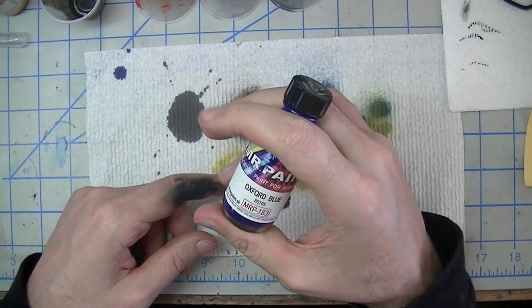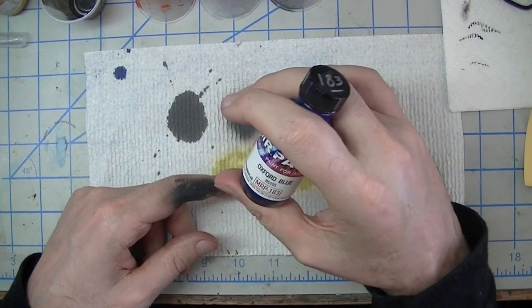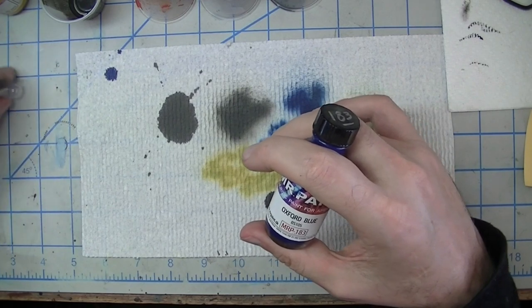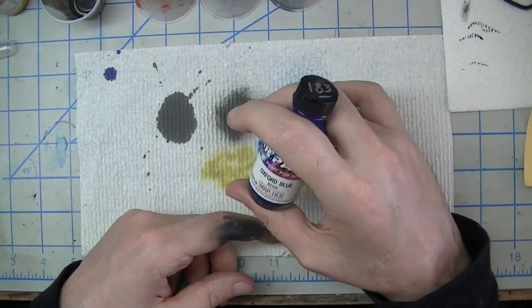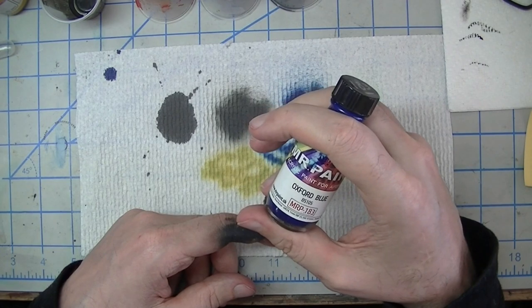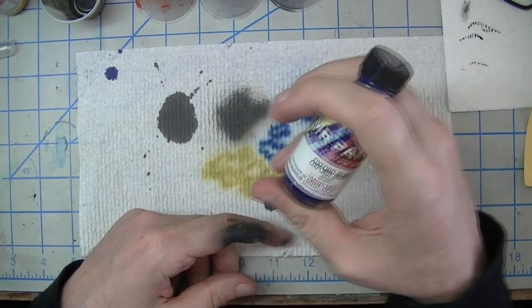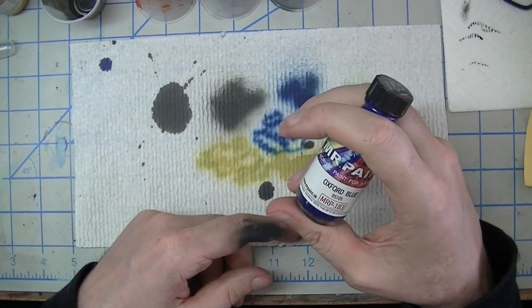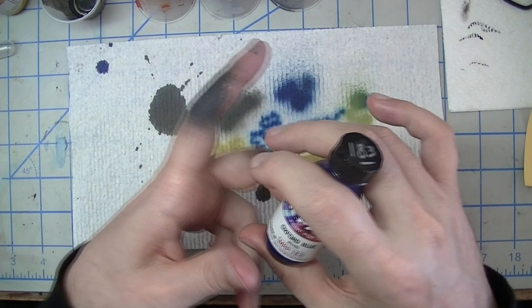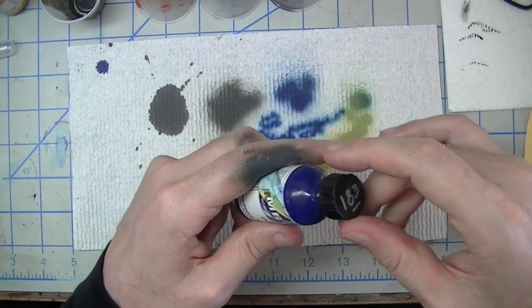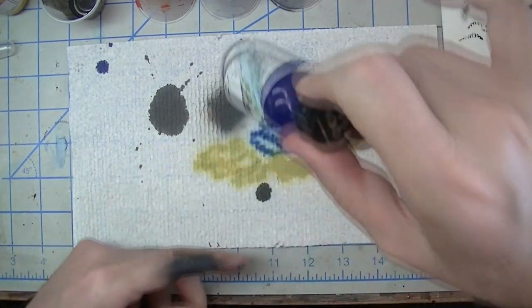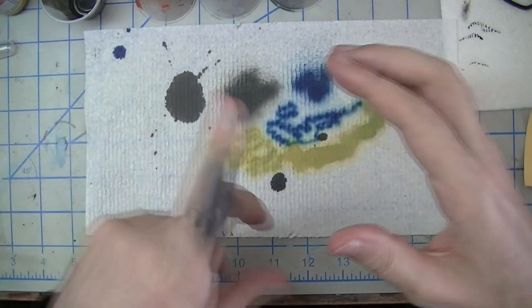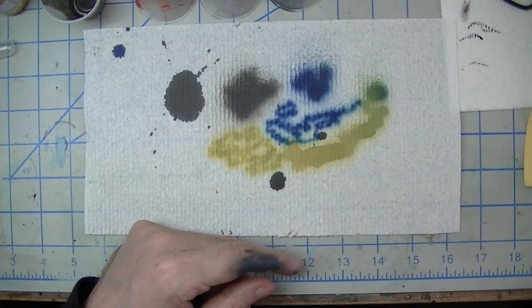I see people asking when MRP gets brought up, 'what do I thin it with, how much, what ratio do I need to use?' It's an unfortunate thing that we're kind of programmed to believe that every single paint we buy requires thinning, and that's understandable given the nature of most paints out there, but it's simply not true with MRP. You can thin it with Mr. Leveling Thinner or any other lacquer thinner and there may be situations where you want to, but for normal everyday paint work it's great right out of the bottle.